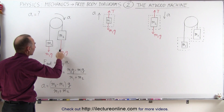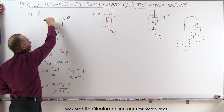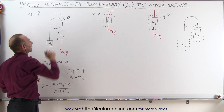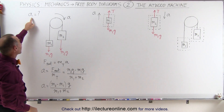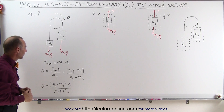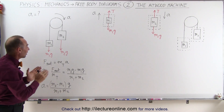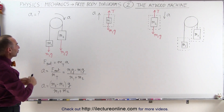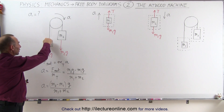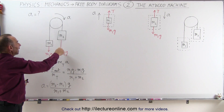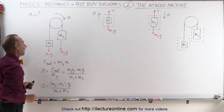M2 will accelerate downward and M1 will accelerate upward, and we indicate the direction of acceleration with arrows. We only look at the external forces acting on the system, and there are only two of them: M1g pulling down on M1, and M2g pulling down on M2.